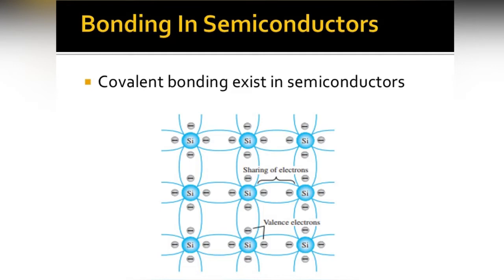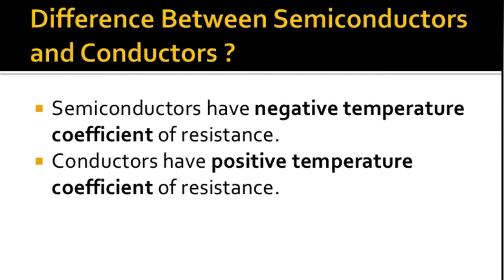Bonding in semiconductors — what kind of bonding exists in a semiconductor? In semiconductors, covalent bonds exist. A covalent bond, also known as a molecular bond, is the chemical bond that involves the sharing of electron pairs between atoms. As seen in the figure, each silicon atom has four electrons in the outer shell, and neighboring silicon atoms share electrons to form covalent bonds.